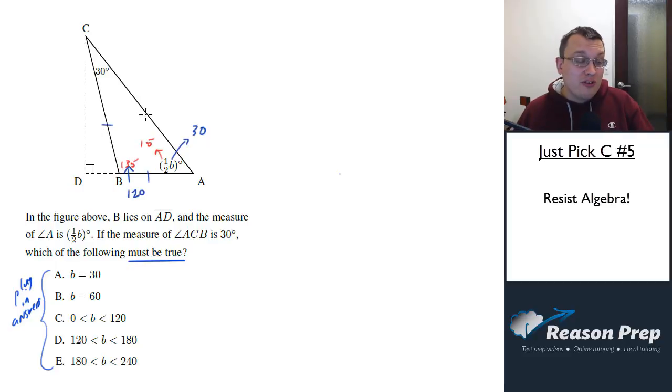So maybe it's not the case that B could be 60 or that this could be 30. And even if we agreed with that, couldn't it be B equals 31?